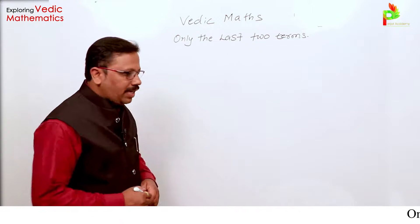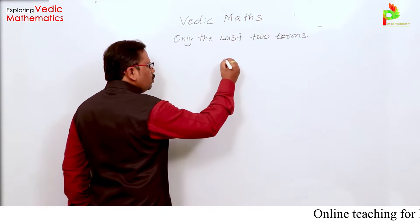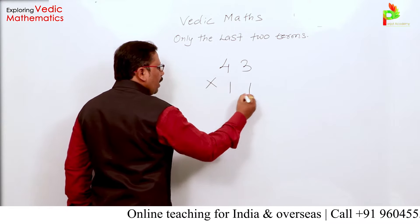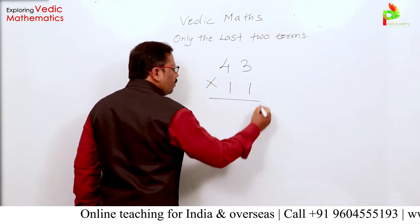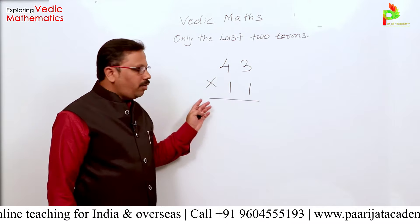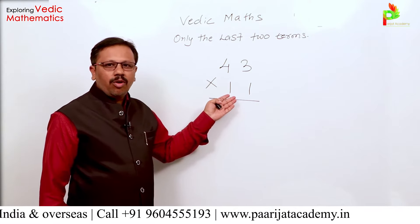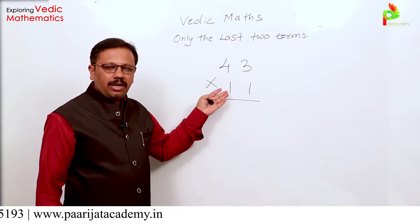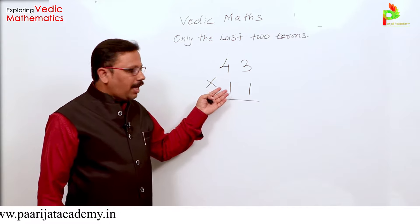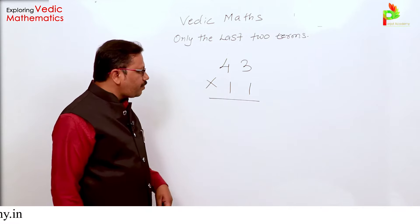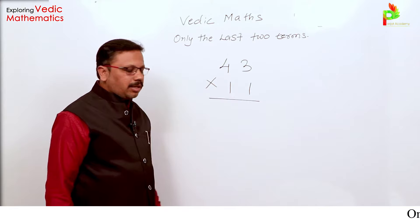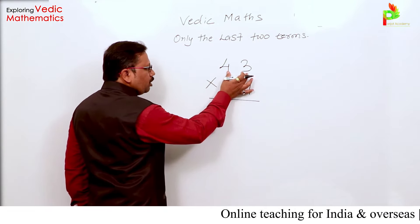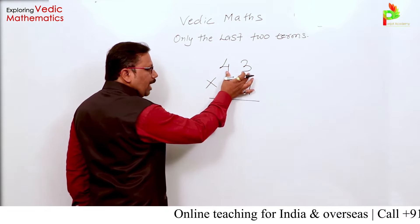We will see with one example. Suppose we have to multiply 43 by 11. By the school method, we have to use the table of 11, and in many situations students struggle with that. But by Vedic Mathematics, how do we do it? We look at only the last two terms — it simply means we add those two terms.